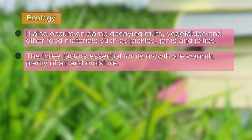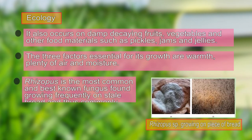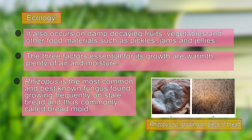A luxuriant growth of Rhizopus can easily be obtained in the laboratory by placing a piece of moist bread exposed to air for a couple of days. At first it appears as a small white patch, which further grows and becomes dark black in color, indicating that sporulation has started. You can see the picture of bread where it is white in early stages and becomes dark black with blackheads, showing it has started reproducing.